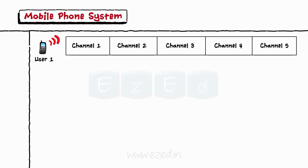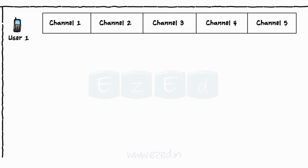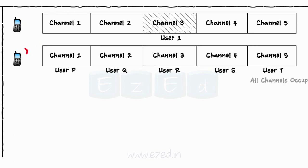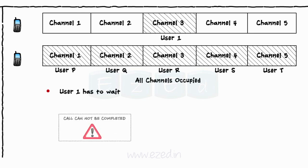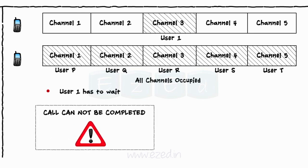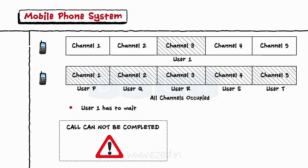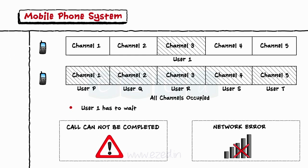Whenever a user makes an attempt to call someone, a separate channel is assigned to the user by the MSC. If all the channels are already occupied by other users, then this user has to wait for a channel to become free. In such a case, the user gets a notification such as "Call cannot be completed" or "Network error", etc.